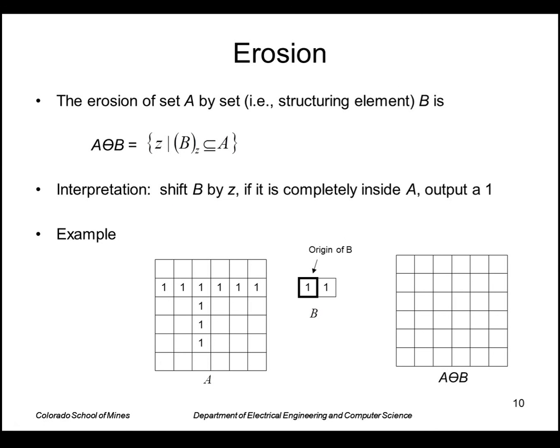Okay, so the first simple morphological algorithm we'll talk about is erosion. Erosion of a set A by some other set, namely a structuring element B, is defined as this equation. It says that A eroded by B is all element Z such that if we translated B by that offset Z, it's entirely within A—it's a subset of A. Namely, we shift B by Z. If that shifted B is completely inside A, we output a one at that location.